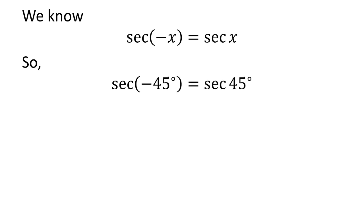Let us apply the above identity for secant of minus 45 degrees. Here, x is 45 degrees. So secant of minus 45 degrees is equal to secant of 45 degrees.